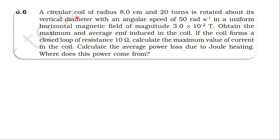From the topic of electromagnetic induction, question 6.6: A circular coil of radius 8 centimeter and 20 turns is rotated about its vertical diameter with an angular speed of 50 radian per second